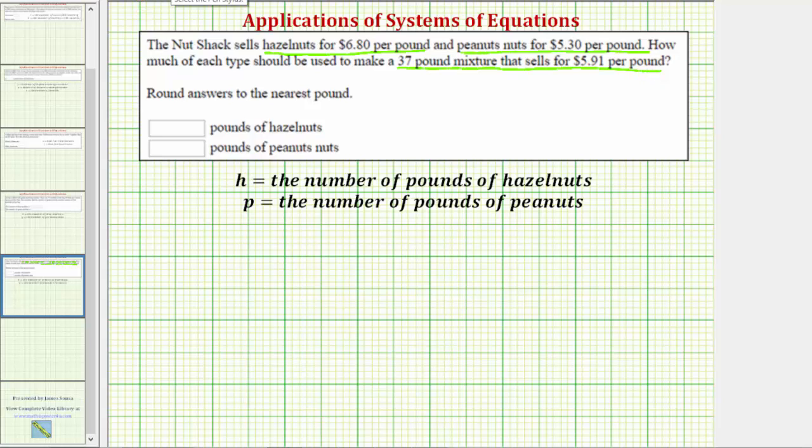Let's first define the variables to represent the unknowns. Let h equal the number of pounds of hazelnuts and p equal the number of pounds of peanuts.